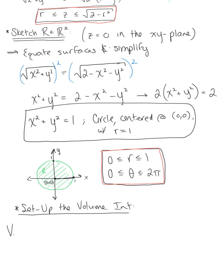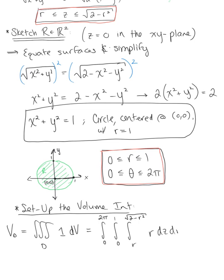Setting up the triple integral for the volume of solid region D: the integrand is 1 and the differential is dV. Theta is the outer integral from 0 to 2π, the middle integral for r goes from 0 to 1, and the inner integral for z goes from r to √(2 − r²). The differential in cylindrical coordinates is r dz dr dθ. We're ready to start integrating.